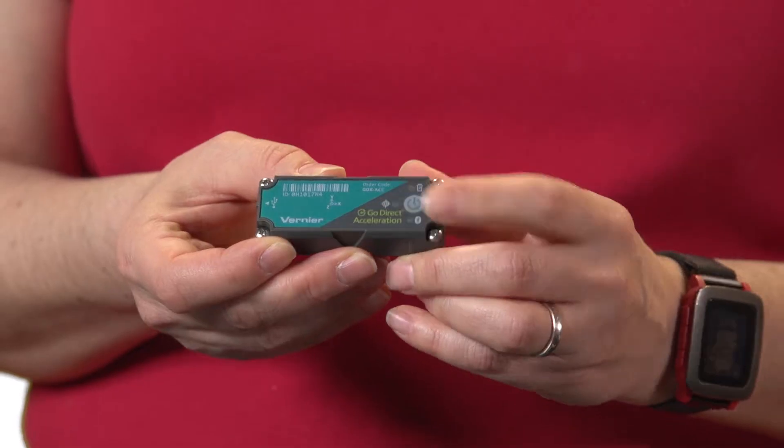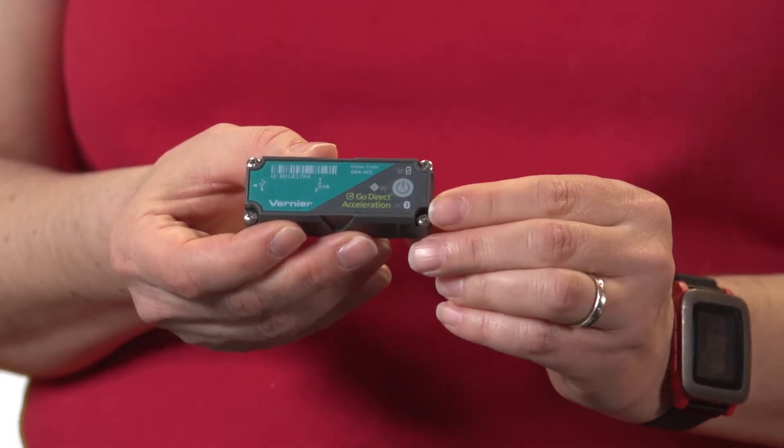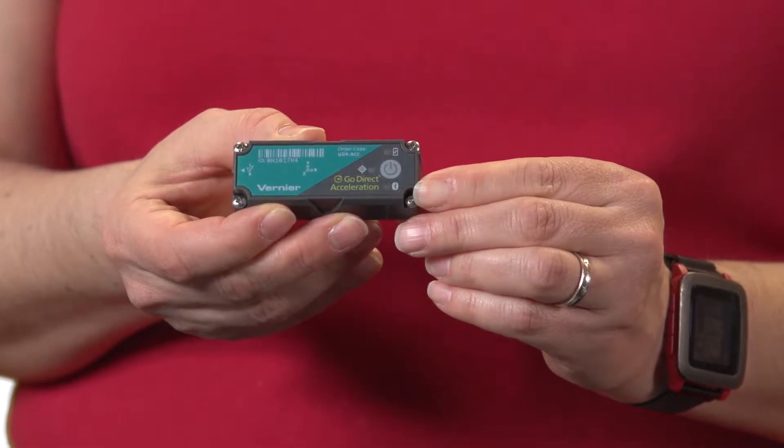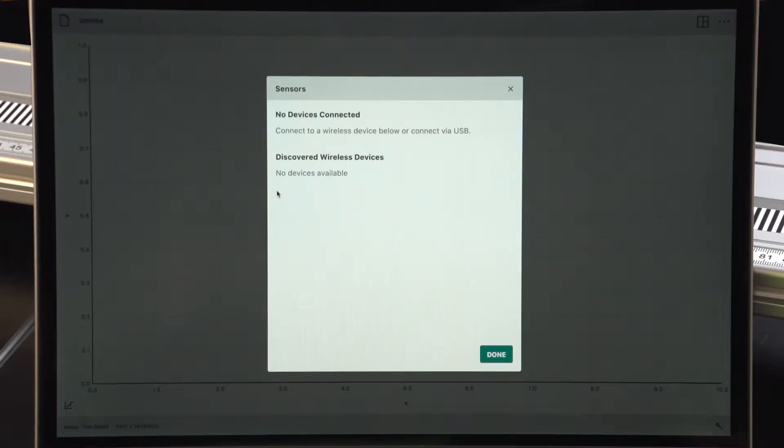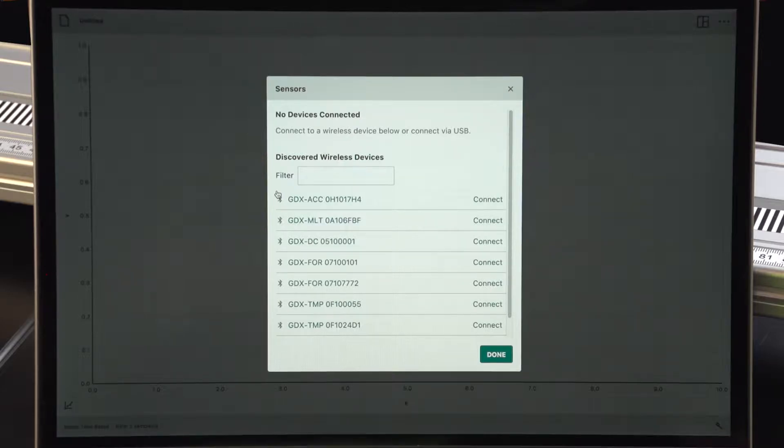In order to connect, first I need to turn on the sensor. The flashing red light indicates that it's ready to connect. In Graphical Analysis, I'll choose Sensor Data Collection, and then I'll have to find what sensors are available.